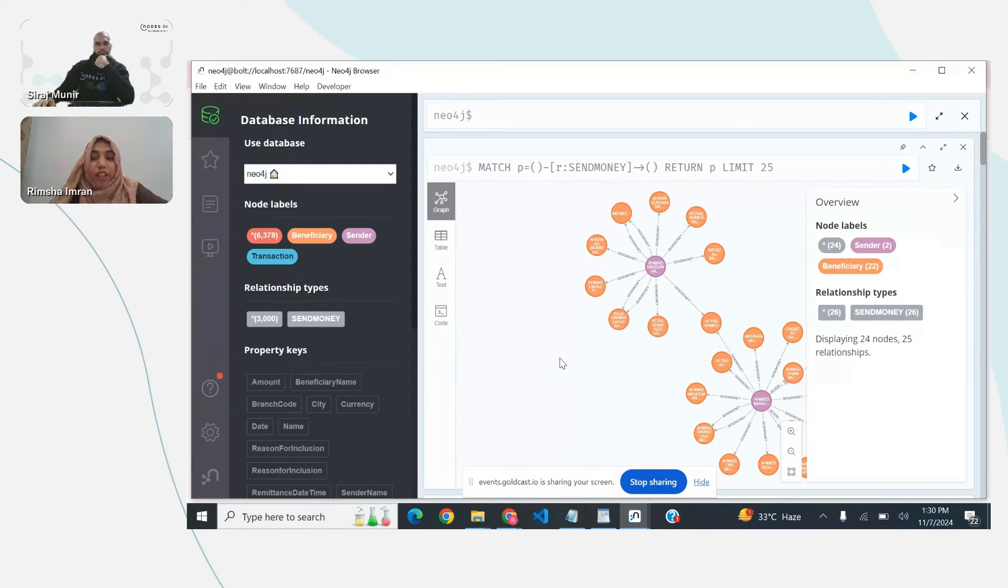By adding semantics, we turn isolated data points into a meaningful graph that can be used for further analysis. This is why data modeling matters. It helps us transform raw, unconnected data into actionable insights. By modeling relationships correctly, we can detect suspicious activities like money laundering much more efficiently. With that, I hope you can see the impact of proper data modeling on AML efforts. Thank you for your attention, and I will hand it back to Siraj for the wrap-up or any questions.